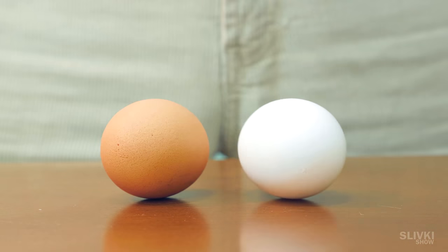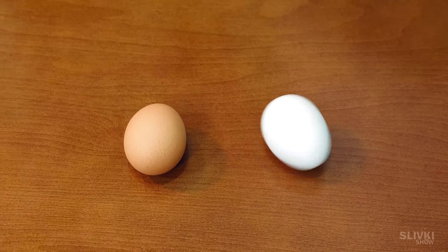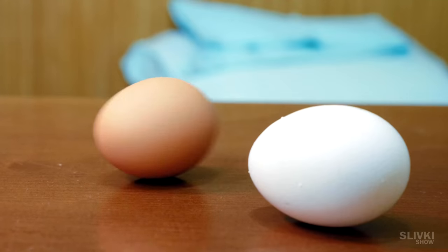If you have two eggs and you want to find out which one is boiled, just roll them. The egg spinning slowly is raw and the one which is spinning quickly is boiled.